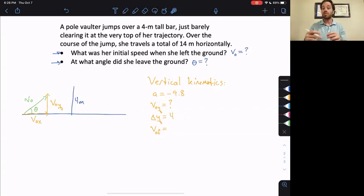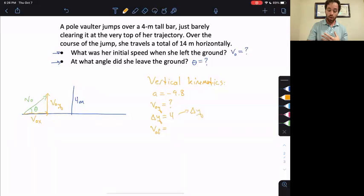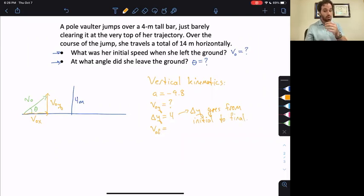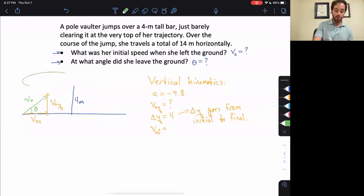The vertical kinematics have a equals negative 9.8, like always, right? The v-naught y is something that we don't know but can hopefully find out. The delta y is 4, and v-f. Now, hang on. I want to talk about this in detail for a second. The fact that we chose delta y to be 4 means that we're talking about a specific initial and final condition. Because delta y goes from the initial to the final.